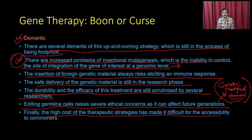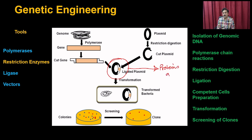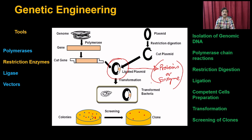If such protocols are approved where a person's genome can be modified, it may go beyond treating disease and could have very significant side effects on future generations. Finally, the high cost of gene therapy has made it difficult for accessibility to common people. This is all about recombinant DNA technology — we discussed antisense technology and gene therapy.